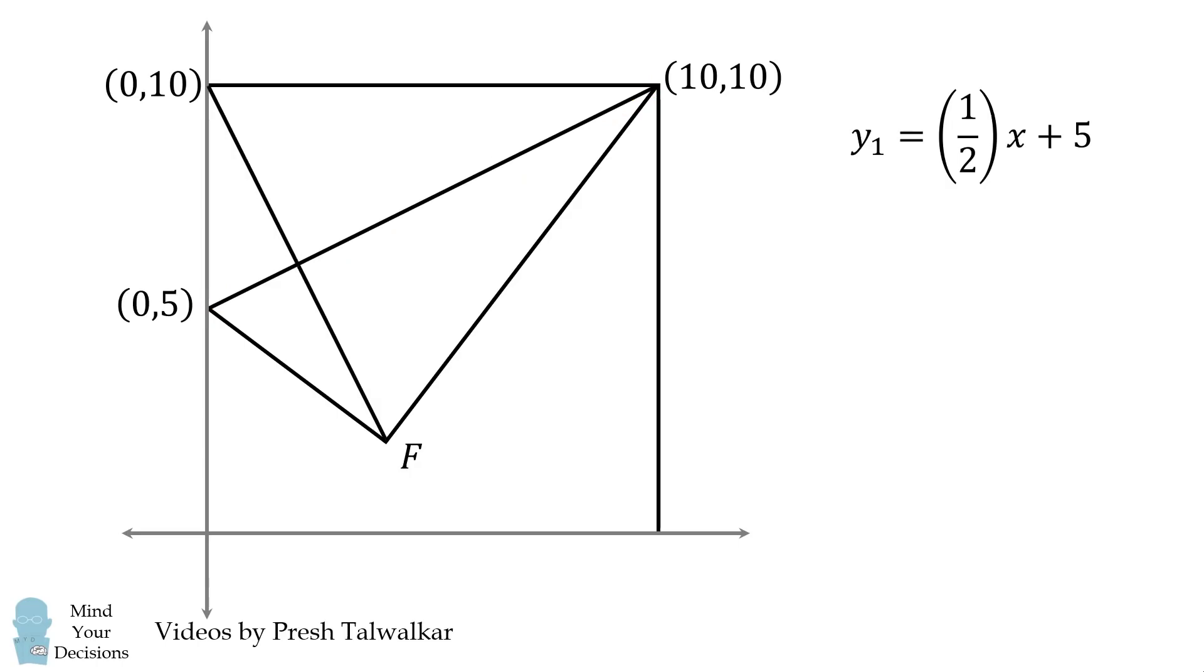We then want to describe the equation of the line that goes through the points 0, 10, and F. Notice that since these two lines are perpendicular, the slope of this line will be the negative reciprocal of the first line. So the slope of this line will be equal to negative 2, and we know its y-intercept is equal to 10. So this line will have an equation that's equal to negative 2x plus 10.